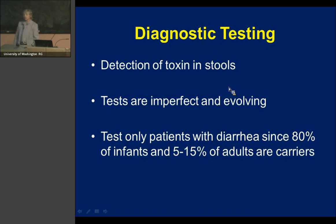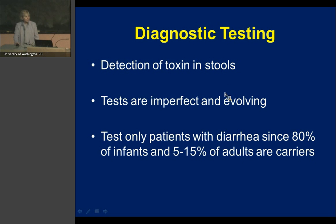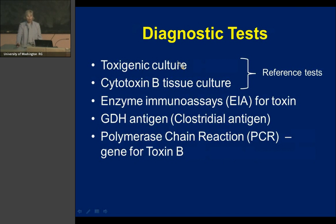Diagnostic testing relies on detection of toxin in the stool. However, the tests are imperfect and have changed. One important point: only send diarrheal stools to the lab, because about 80% of infants can be carriers — and C. diff infection in babies is very unusual, possibly because they lack a receptor for the toxin. But 5 to 15% of adults are also carriers, especially people who have been in the hospital.